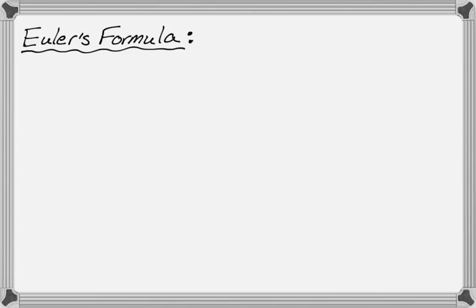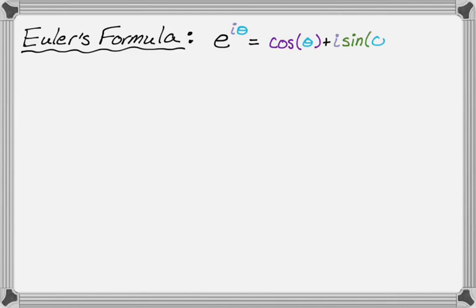The first thing we need to know is Euler's formula. It's a really special relationship that comes up in a lot of places in math. It says that e to the i times theta is cosine of theta plus i times sine of theta. That's pretty remarkable — we have two trig functions, the exponential function e, the imaginary number i, and a theta.